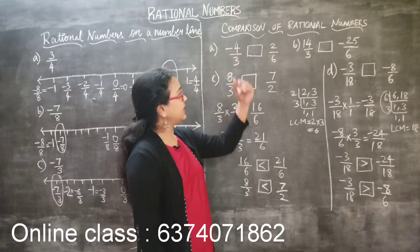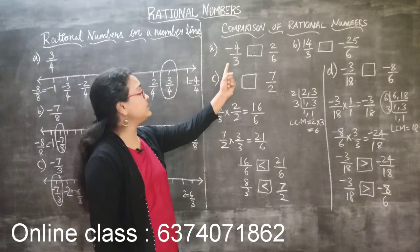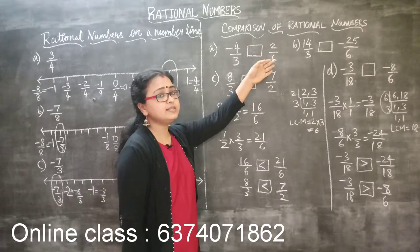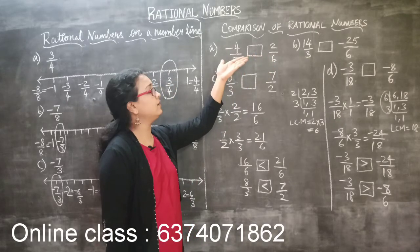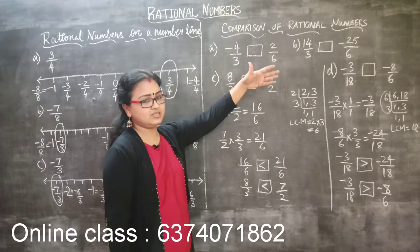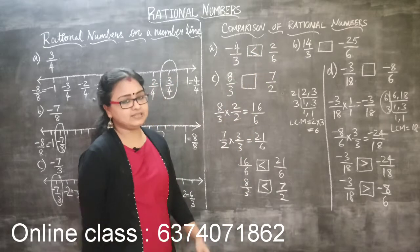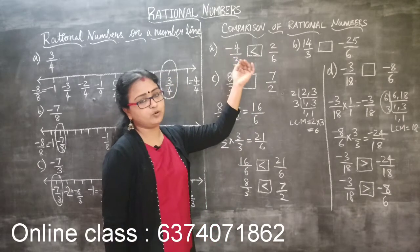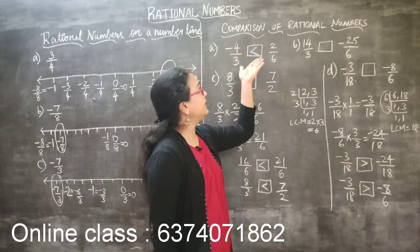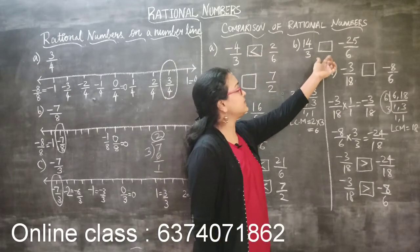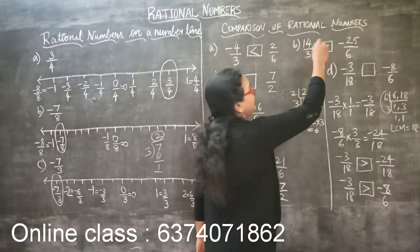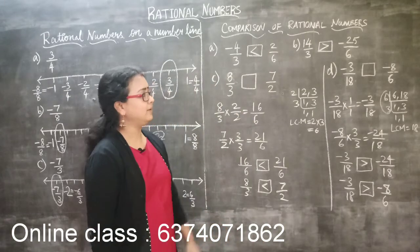Now let's see comparison of rational numbers. The first question is minus 4 by 3 compared with 2 by 6. One is a negative number and the other is a positive number. When the signs are different, it is very simple: the positive number is always greater. So 2 by 6 is greater than minus 4 by 3. Similarly, the next example: 14 by 3 and minus 25 by 6. Since 14 by 3 is a positive number, 14 by 3 is the greater number.